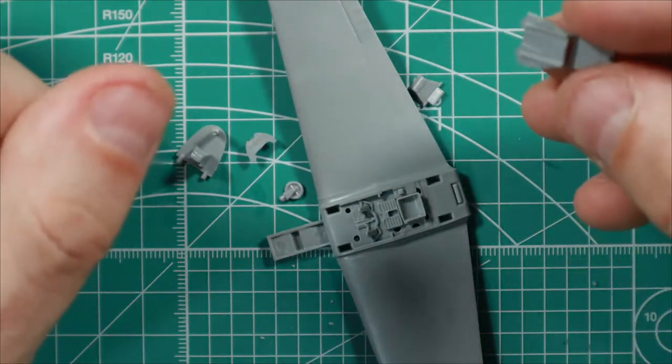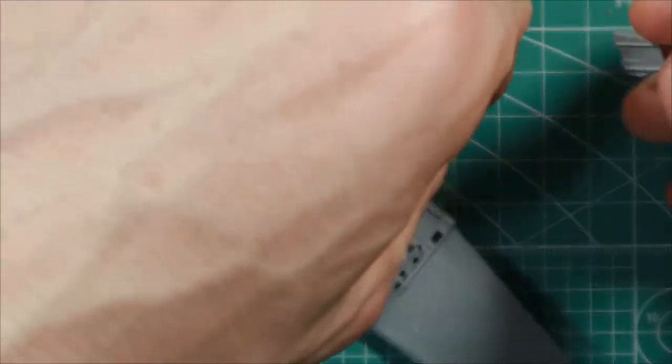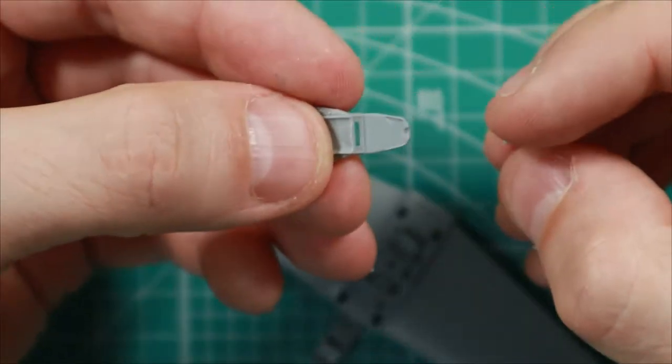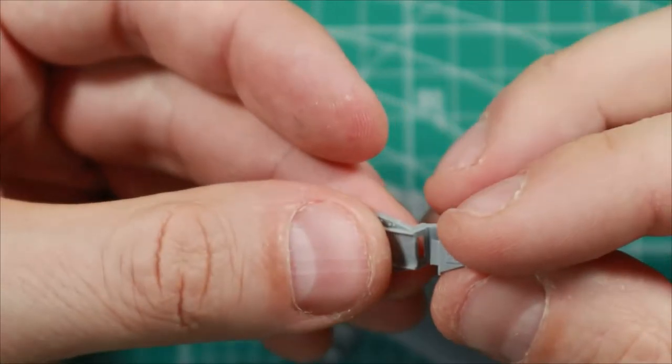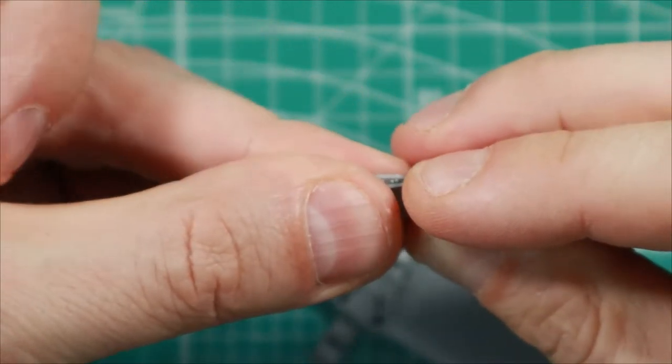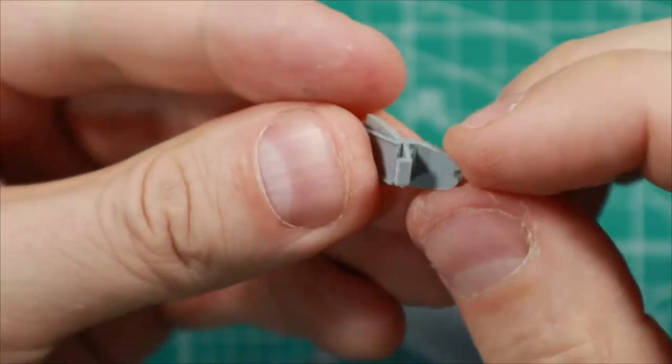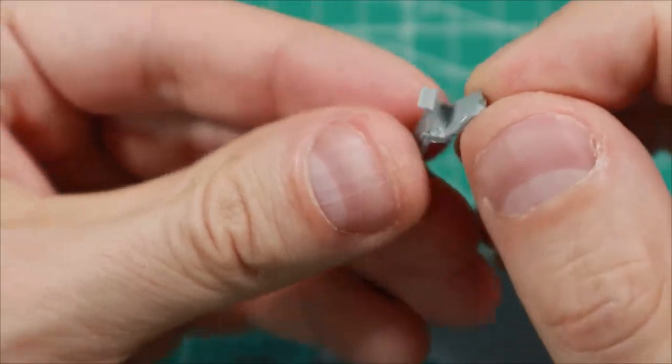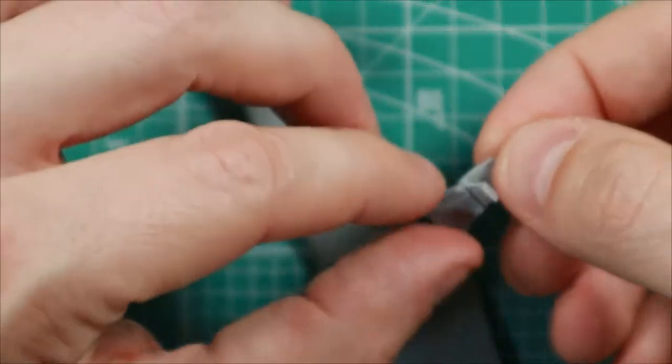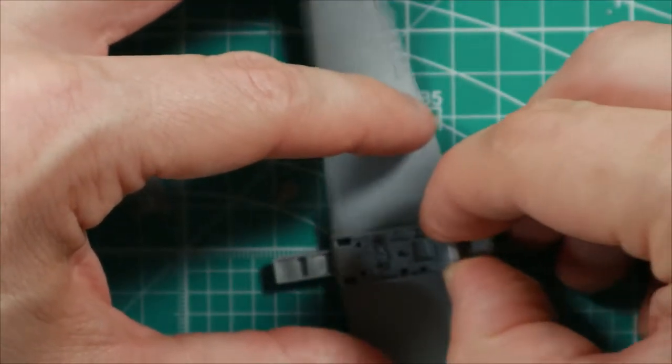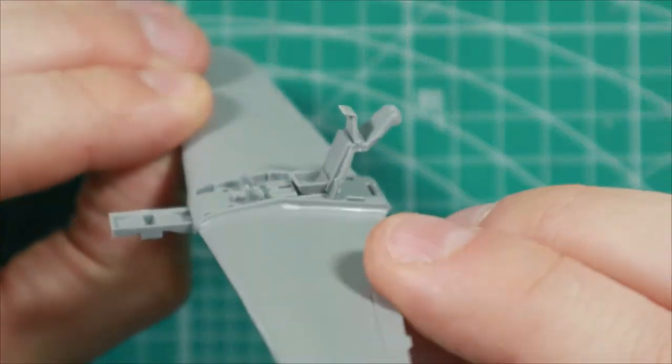Then we have the back wall and the headrest, which goes inside this little hole here at an angle. So slip it in like this. And then the back wall goes into the semicircle area in the back, slightly at an angle.